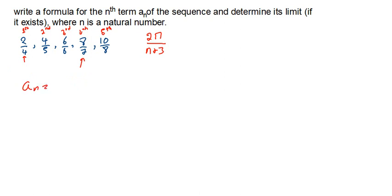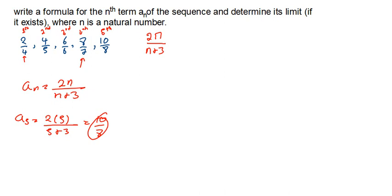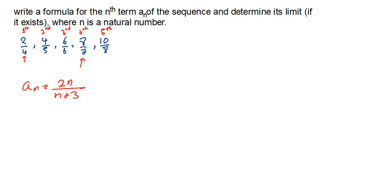So if your an equals 2n over n plus 3, let's try the fifth term: 2 multiplied by 5, divided by 5 plus 3, giving us 10 over 8. You can also try it out for other terms. So that's our formula: an equals 2n divided by n plus 3. Now we have to determine the limit for that, if it exists.